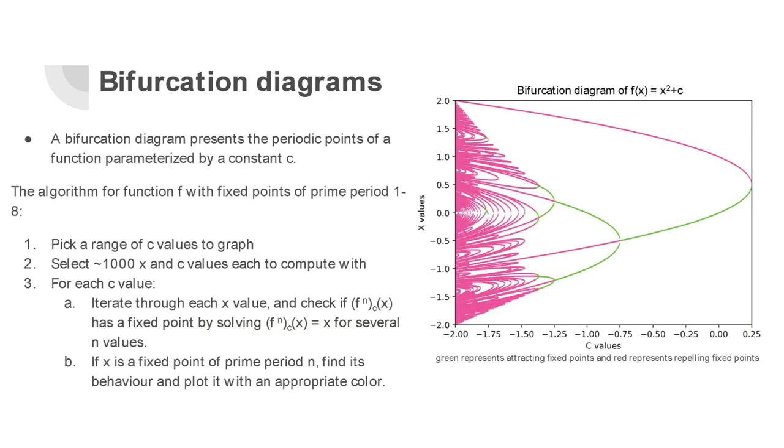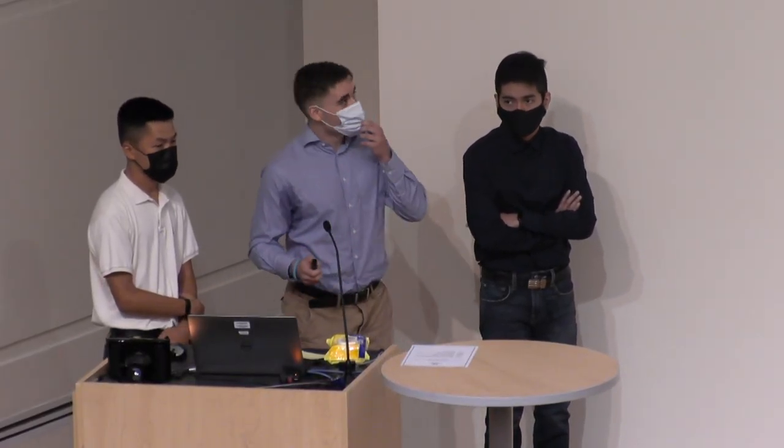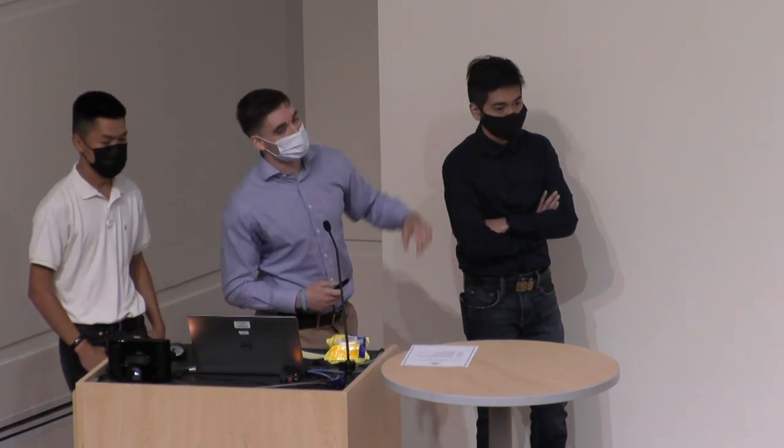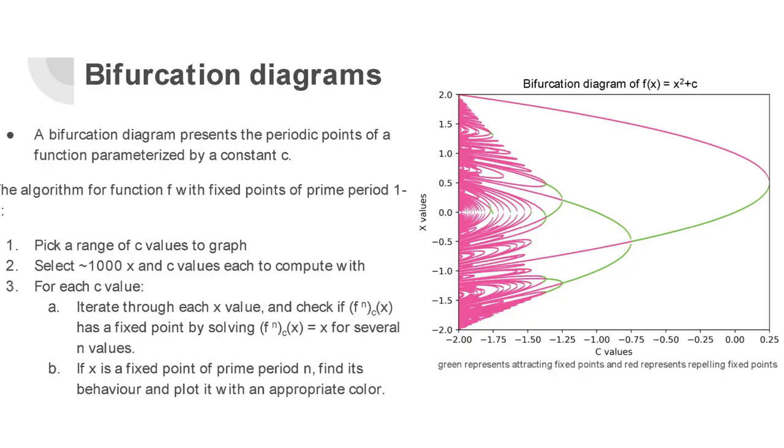Now that we've seen that periodic points and fixed points tell us a lot about the behavior of the orbits of points in the functions, intuitively it'd be useful to have an idea of where these fixed points and periodic points are. So what mathematicians use is bifurcation diagrams to get an idea of where they are. A bifurcation diagram is going to tell us where the periodic points and fixed points are for a whole family of functions. By a family of functions, I mean the general structure of a function. Up here we have a quadratic function, which is going to have the form x squared plus c, some constant c. When we graph the bifurcation diagram, we get an idea of every function that has that form and the locations of its fixed points and periodic points.